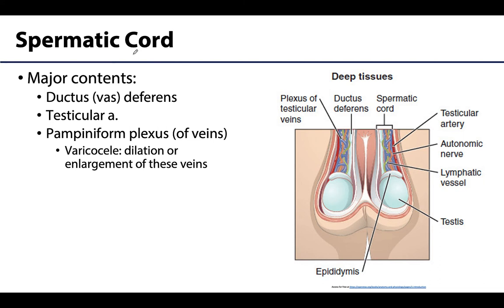The spermatic cord begins at the deep inguinal ring, extends through the inguinal canal, exits the superficial ring, and suspends the testes in the scrotum. Its major contents are the ductus deferens, the testicular artery, and the pampiniform plexus of veins. The testicular artery travels from the abdominal aorta to the testis within the spermatic cord. The pampiniform plexus drains the testes and epididymis via highly anastomotic venous channels. The close relationship between these veins and the artery allows heat exchange and helps maintain the lower testicular temperature.